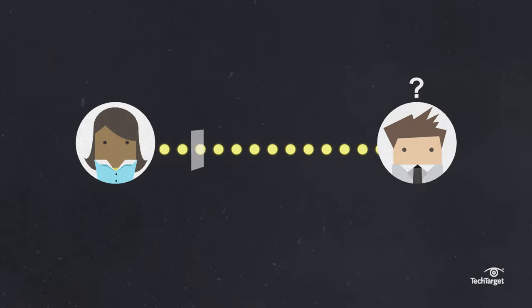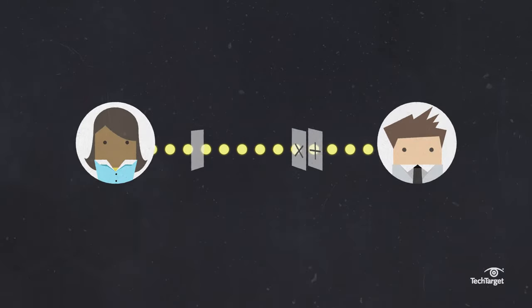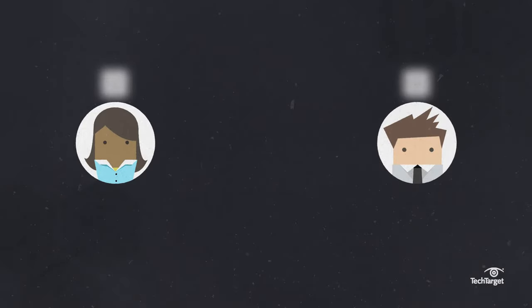As Bob receives the photons, he doesn't know the correct polarization, so he randomly uses one of two beam splitters to read each photon's polarization and decipher the key. Alice and Bob can then compare the splitter they used. The photons read with the wrong splitter are discarded, and the remaining sequence is the key.